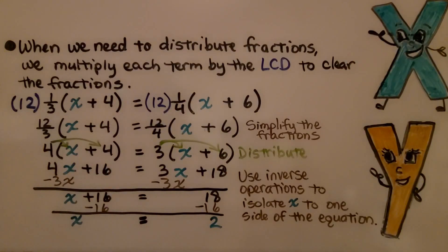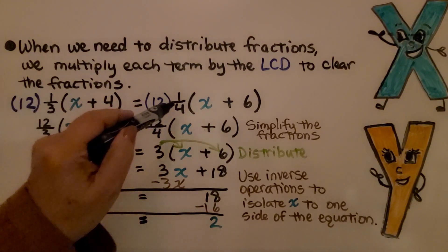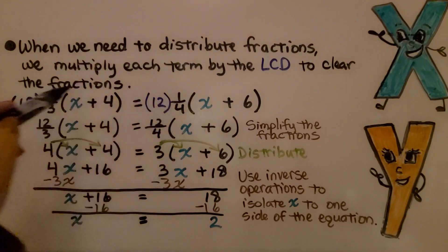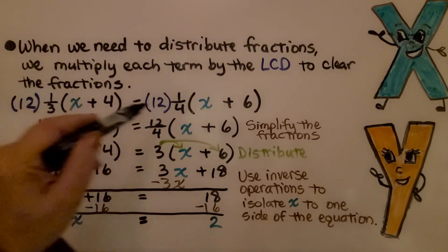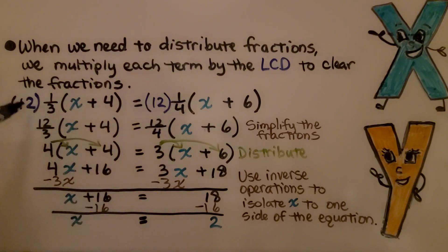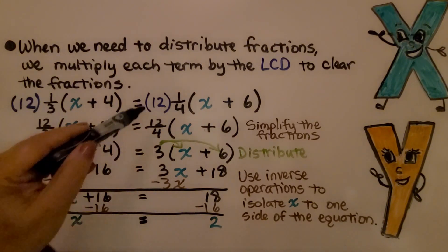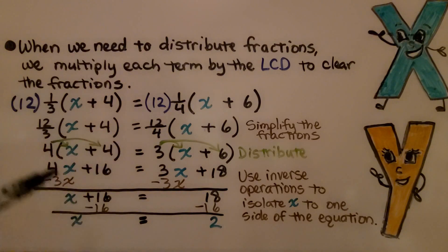When we need to distribute fractions, we multiply each term by the LCD, the least common denominator, to clear the fractions. We have a 1/3 that we need to distribute, and a 1/4 that we need to distribute. Well, their lowest common denominator would be 12. So we multiply 12 times 1/3 and get 12/3, and we multiply 12 times 1/4 and get 12/4.